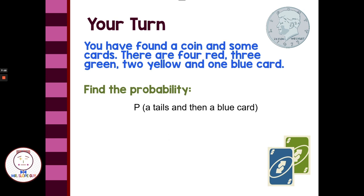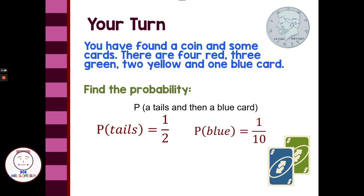Welcome back. We have the same basic problem — a coin and some cards: four red, three green, two yellow, and one blue. We want to find the probability of tails on the coin and then drawing a blue card at random. Probability of tails is one-half — one success out of two possibilities. There is only one blue card out of ten, so the probability of drawing a blue card is one-tenth. One-half times one-tenth gives us one-twentieth. So one out of every twenty times, I'd expect to flip tails and draw the blue card.